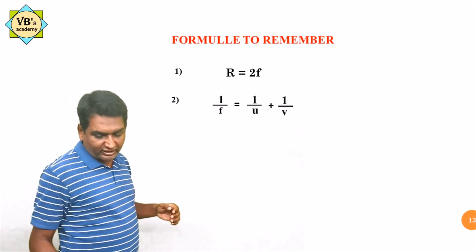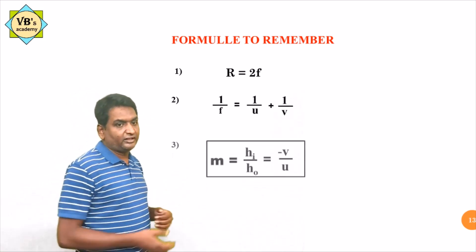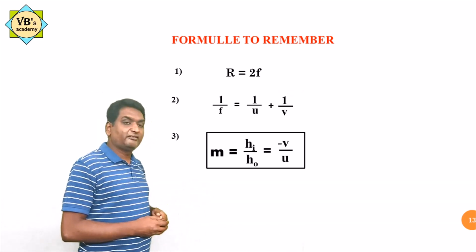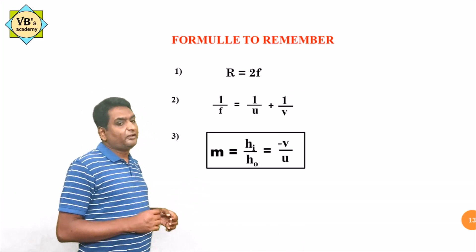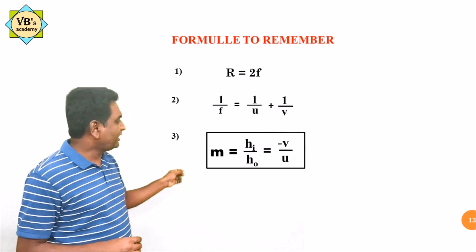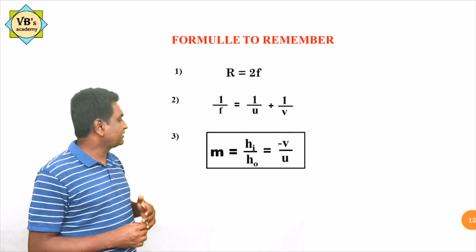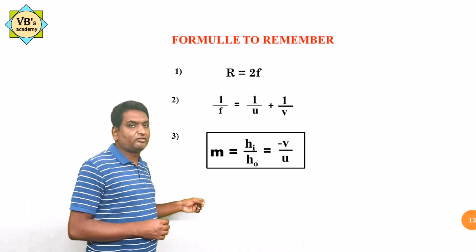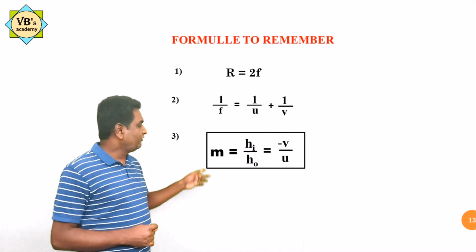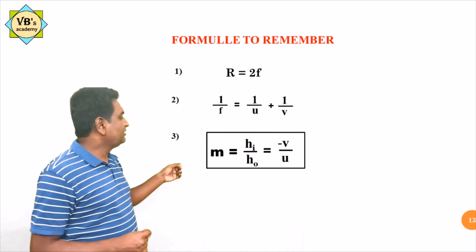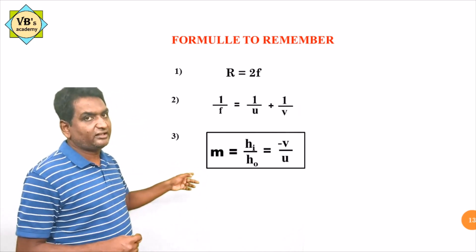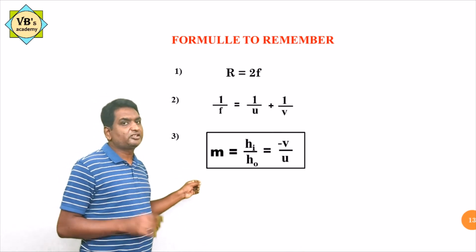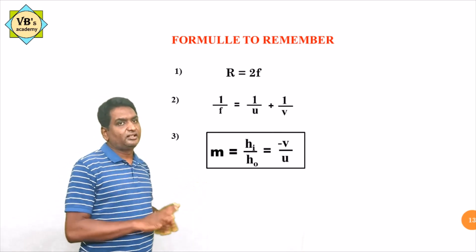The second one is the mirror equation: 1/F = 1/U + 1/V, where F is the focal length, U is the object distance, and V is the image distance. The third is the magnification formula: M = image height / object height = Hi/H0, which also equals minus V/U. The minus sign is there — sign conventions must be remembered.